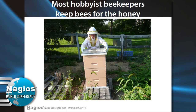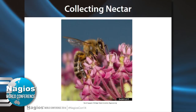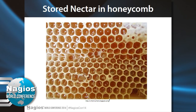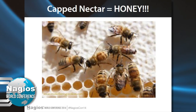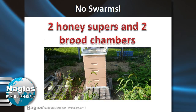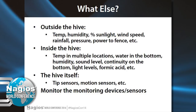Most hobbyist beekeepers keep bees for their honey. The bees go out and collect nectar, store it in honeycomb, cure it, and evaporate it down to about 17% water. Then they cap it, and that capped nectar is now honey. So the weight of the hive would be the obvious thing to start monitoring — it's very important because you don't want not enough room for your bees, otherwise they will swarm.